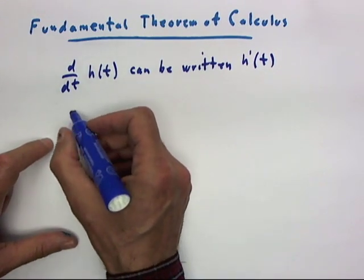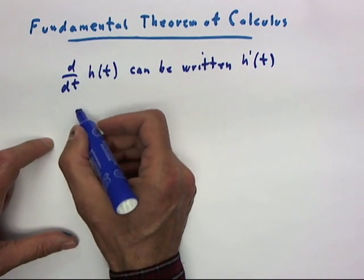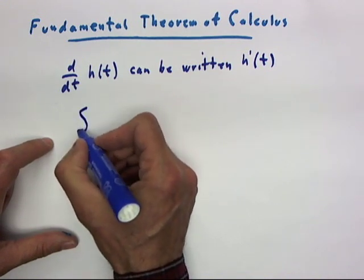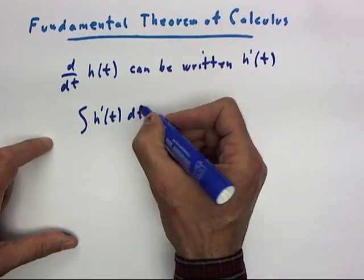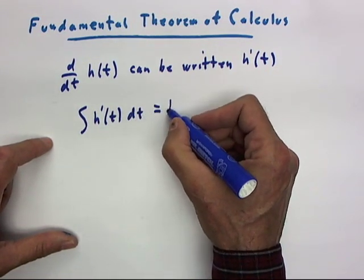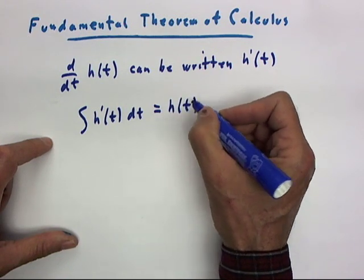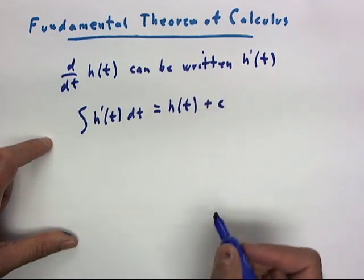In this case, the fundamental theorem tells us that the integral of h prime of t dt is just h of t plus a constant.